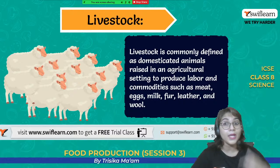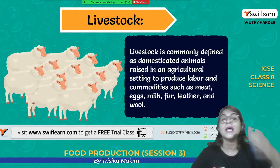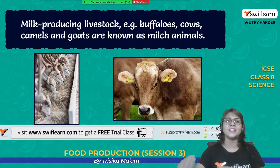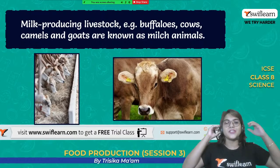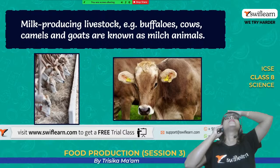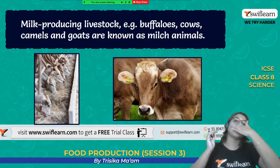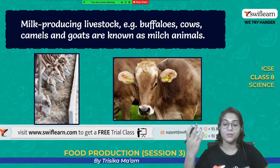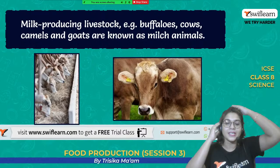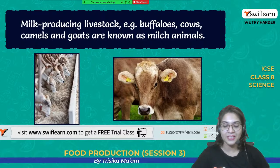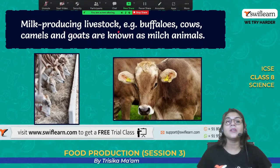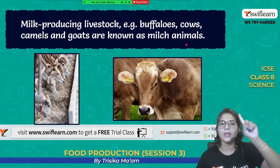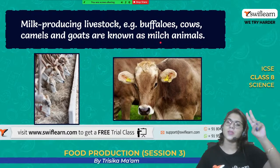We can basically divide all this rearing of different animals into different branches, which we will discuss today. Let's start with milk-producing livestock. We get milk from buffaloes and cows. Other than buffalo and cow, we also get it from camels, mainly used in desert areas, and from goats and yak, used in the mountainous region. The animals which produce milk are known as milch animals — milk starts with M, milch starts with M, easy to remember.